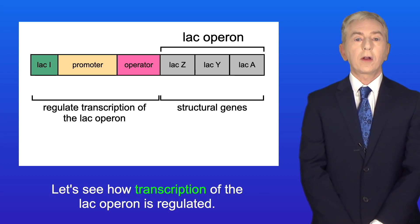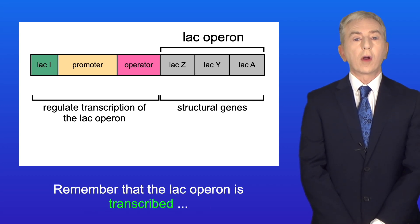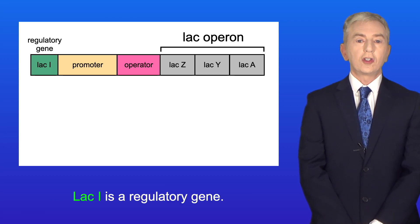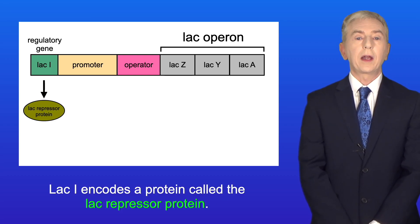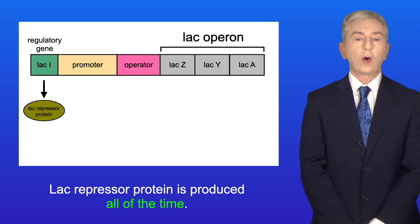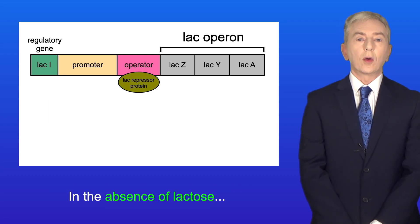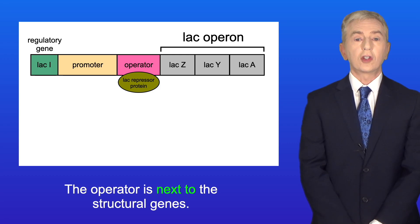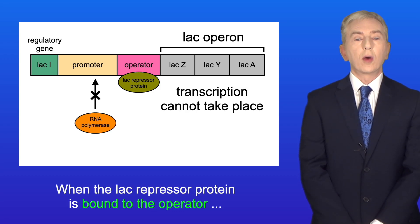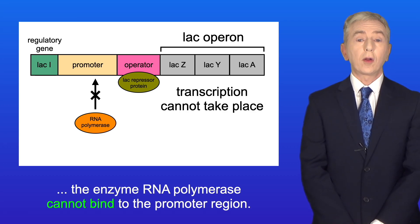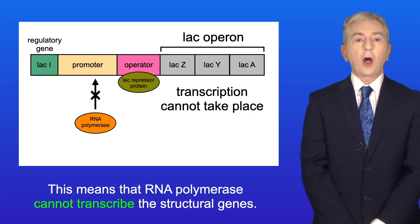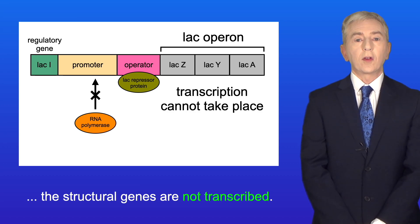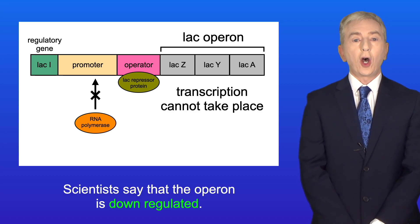Let's see how transcription of the lac operon is regulated. Remember that the lac operon is transcribed when E. coli is respiring lactose. Lac I is a regulatory gene and encodes a protein called the lac repressor protein, which is produced all of the time. In the absence of lactose, the lac repressor protein binds to a region of DNA called the operator, which is next to the structural genes. When the lac repressor protein is bound to the operator, RNA polymerase cannot bind to the promoter region and cannot transcribe the structural genes. So in the absence of lactose the structural genes are not transcribed — scientists say the operon is down-regulated.